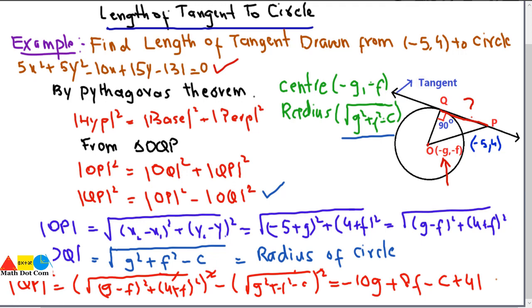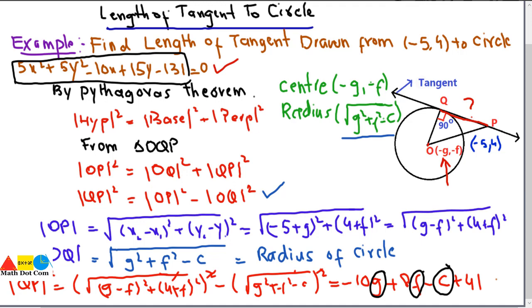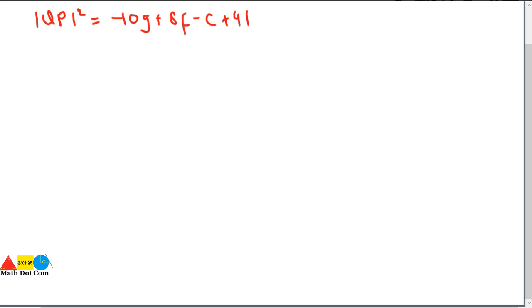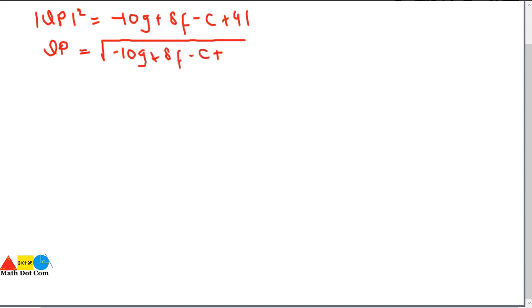In order to find the length of the tangent, the unknowns here are G, F, and C. Taking the square root of both sides, QP = √(-10g + 8f - c + 41). We now need to find G, F, and C from the equation of the circle given in the question.